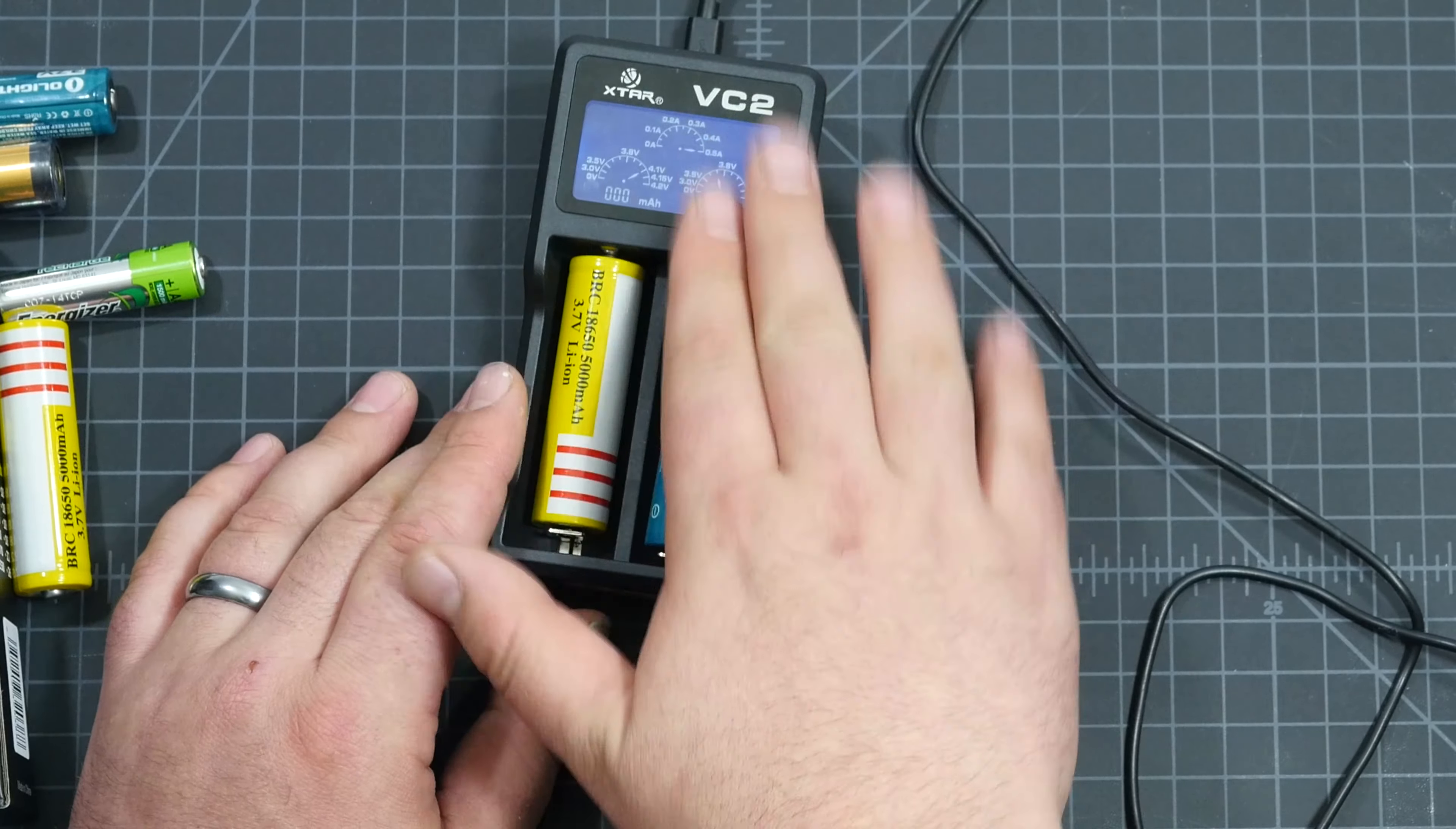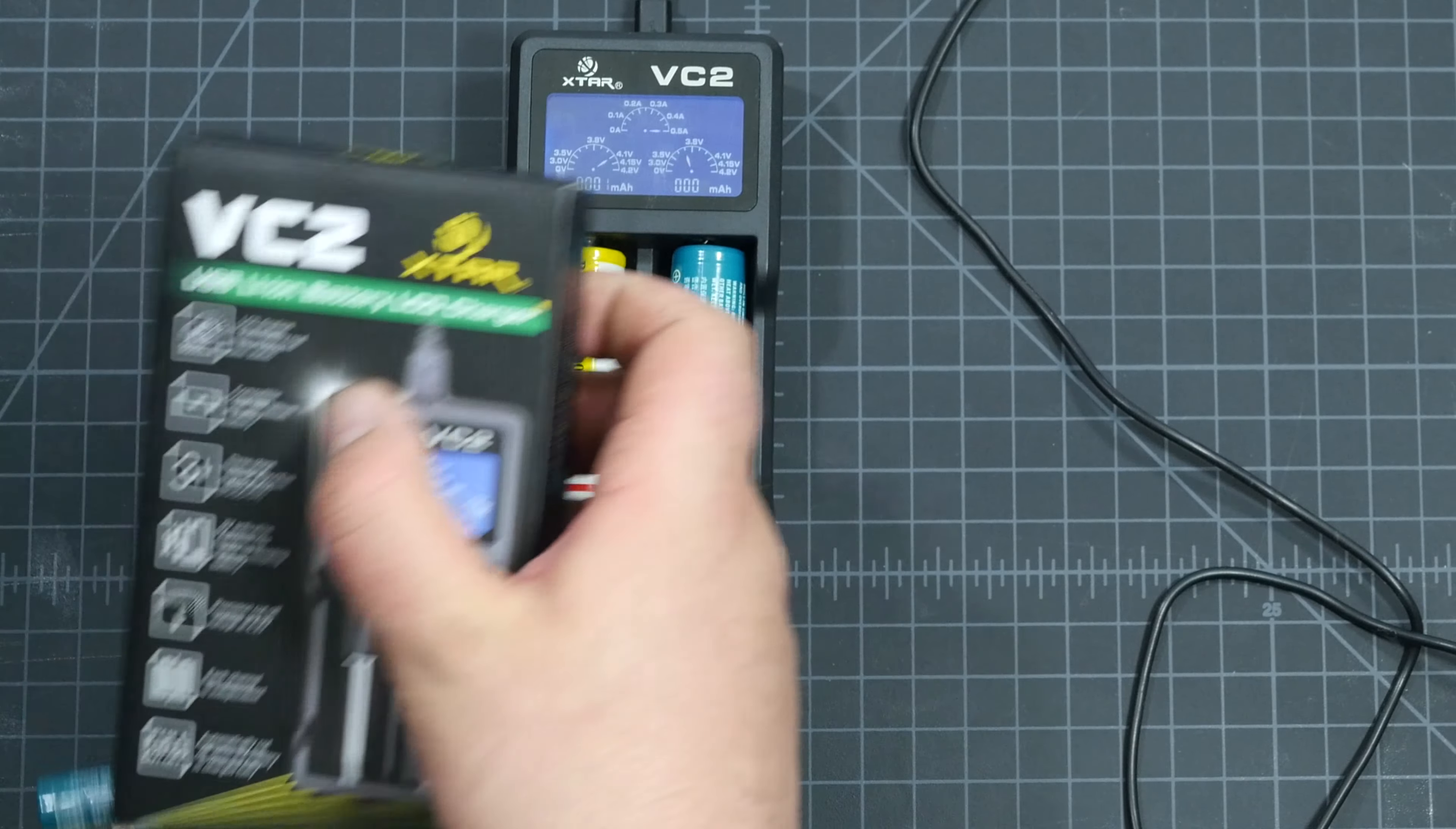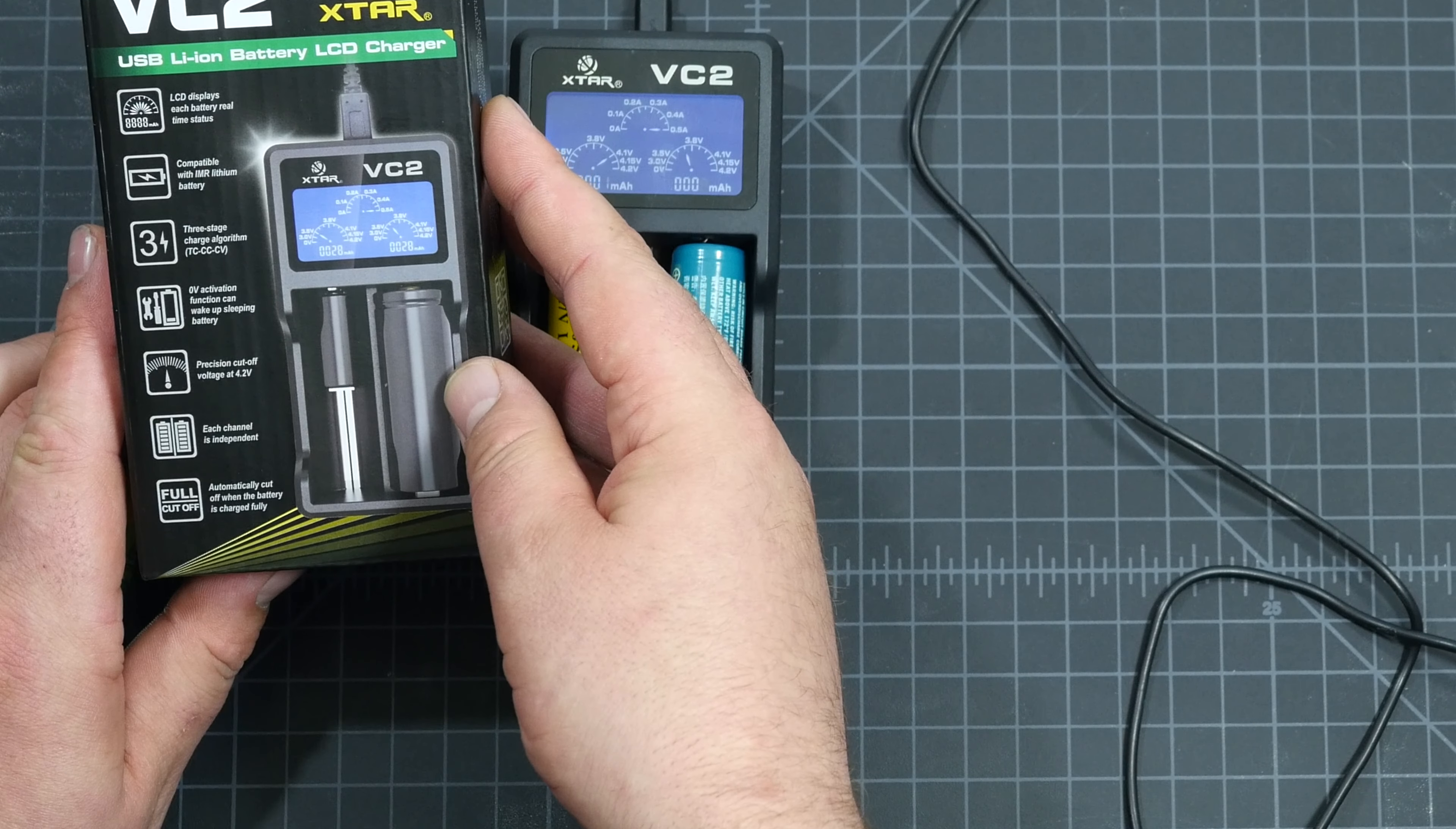I mean, it's a nice charger to have around to charge those batteries. And I'll go ahead and put a link in the description. That's the VC2 X-TAR and that's sold by Skybed on Amazon. That's that. Thanks for watching.